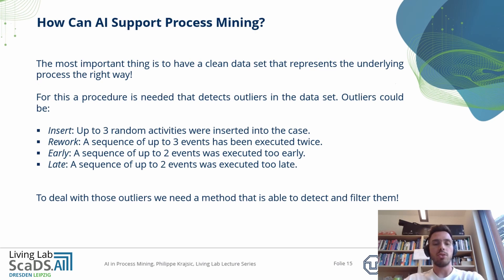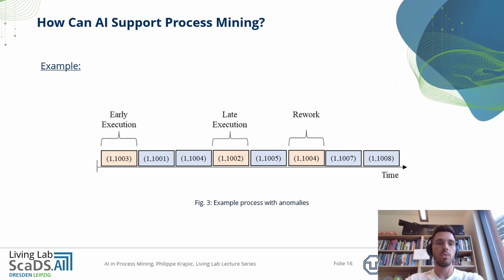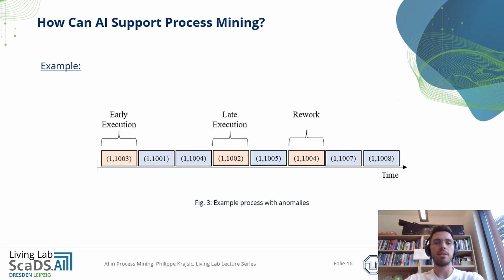To deal with those outliers, we need a method that is able to detect and filter them. Here we see a simple example of the described anomalies. The blocks marked in red represent process steps that correspond to an anomaly. We can see an early execution, a late execution, and a rework of a process step. Those process steps need to be identified and reordered.